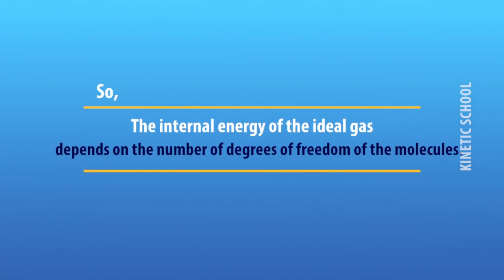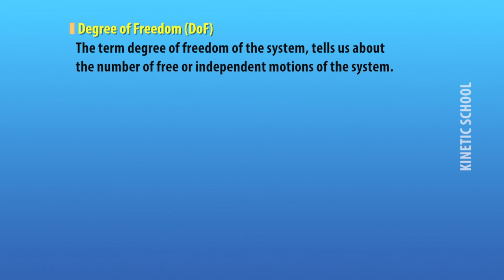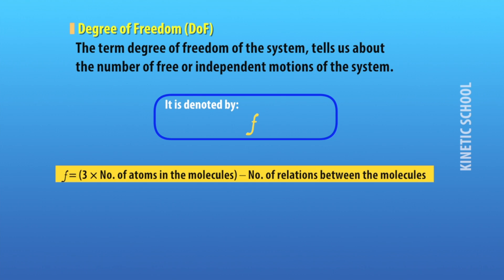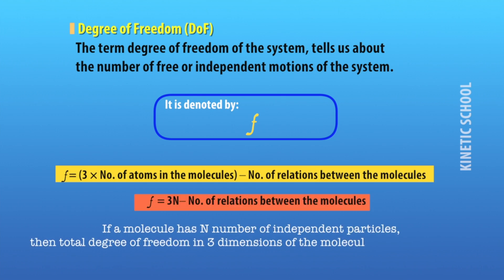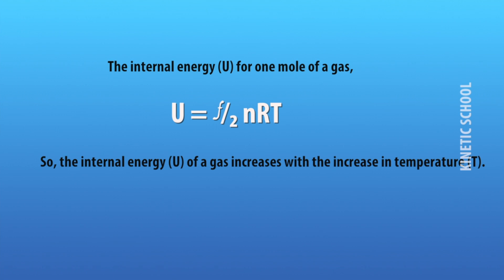The internal energy of an ideal gas depends on the number of degrees of freedom of the molecules. The degree of freedom tells us about the number of free or independent motions of the system, denoted by f, where f = 3 × (number of atoms in the molecule) − (number of constraints). The internal energy for one mole of a gas is U = (f/2) × nRT, so internal energy increases with temperature.